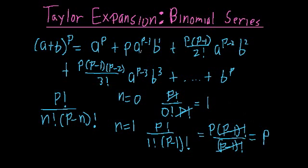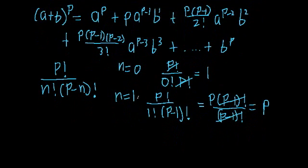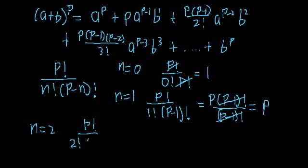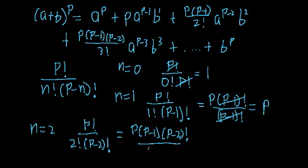For n equals two, the coefficient is p factorial over 2 factorial times (p minus 2) factorial. We rewrite p factorial as p times (p minus 1) times (p minus 2) factorial, so the (p minus 2) factorials cancel and we're left with p times (p minus 1) over 2 factorial — exactly what we had in the expansion. Obviously this pattern continues with more terms.